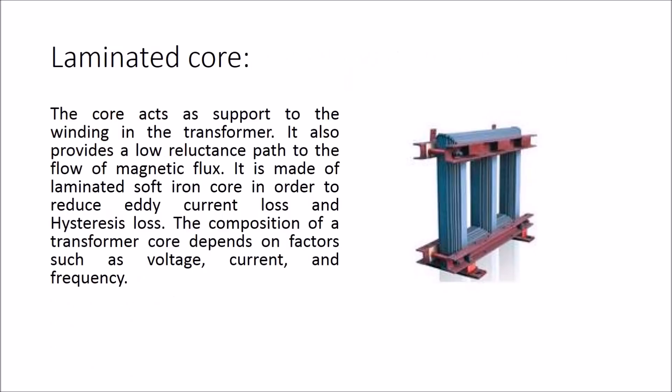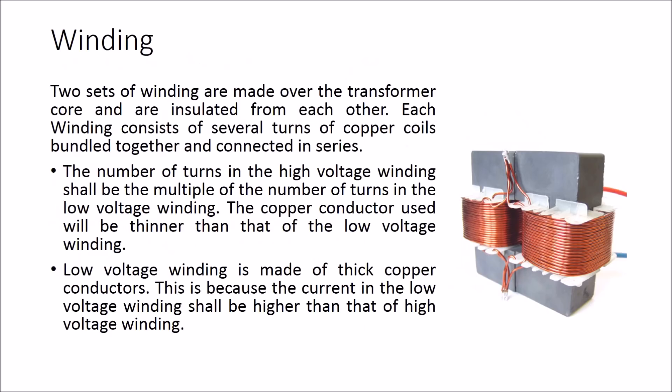The core acts as support to the winding in the transformer. It also provides a low reluctance path to the flow of magnetic flux. It is made of laminated soft iron core in order to reduce eddy current loss and hysteresis loss. The composition of a transformer core depends on factors such as voltage, current, and frequency.